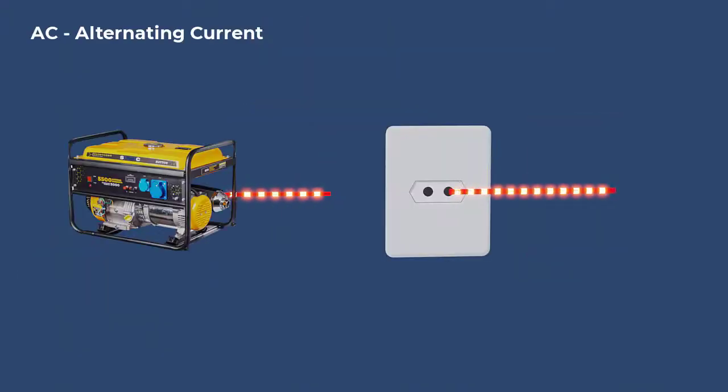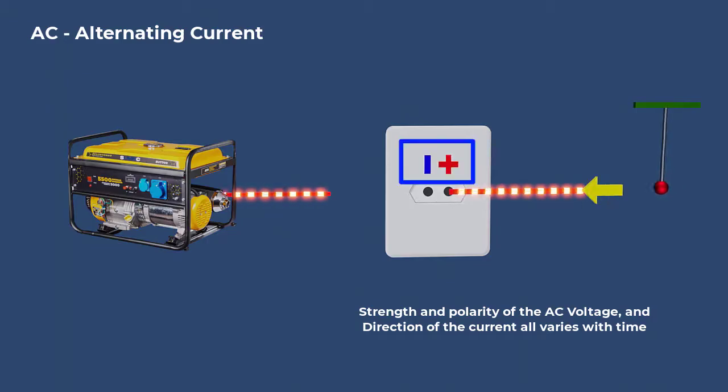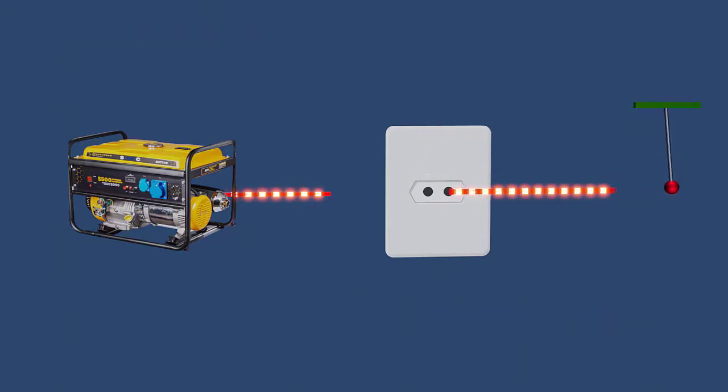On the other hand, alternating current comes from wall outlets and generators. It's a fluctuating current that changes direction, polarity, and strength periodically, typically 60 times per second. It is similar to a pendulum swinging back and forth.